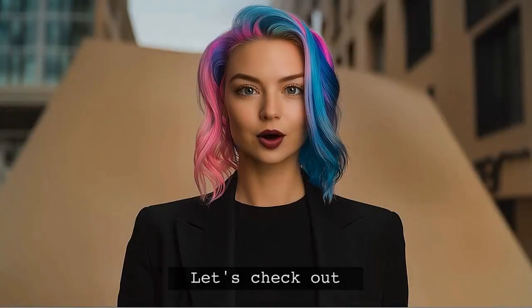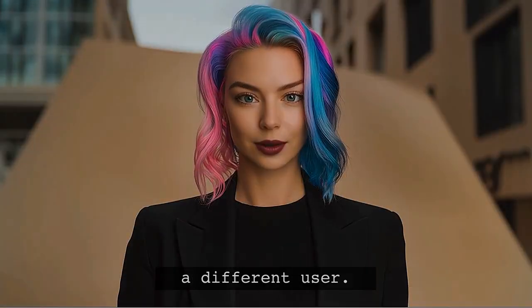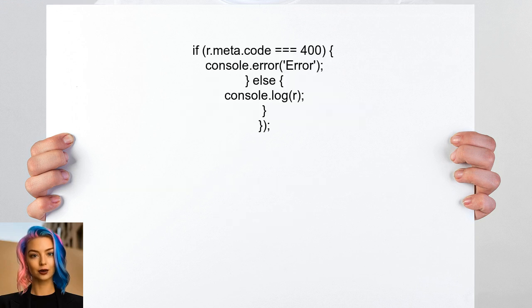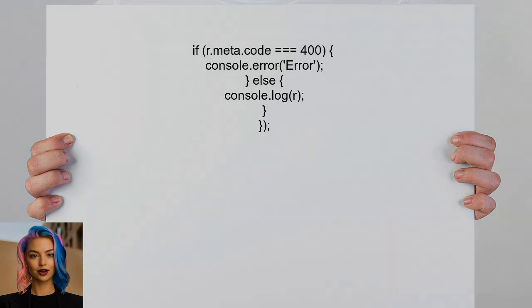Here's another perspective: an alternative approach involves using the Fetch function and checking the response code after converting the response to JSON. If the code is 400, it logs an error message; otherwise, it logs the successful response.